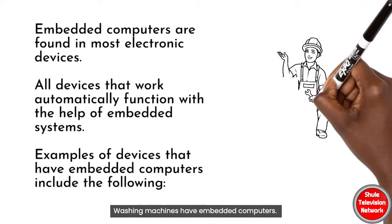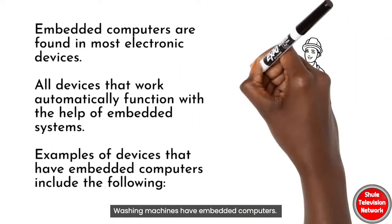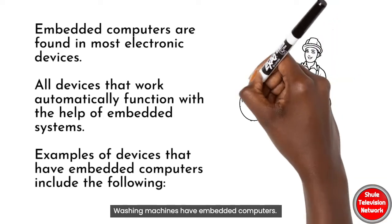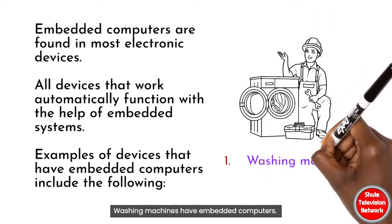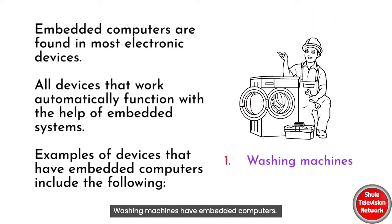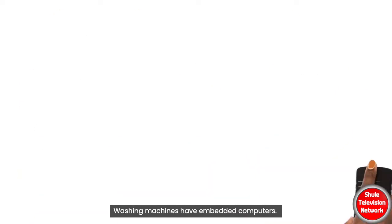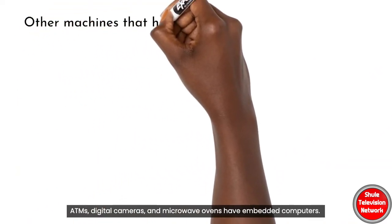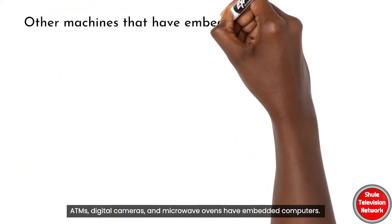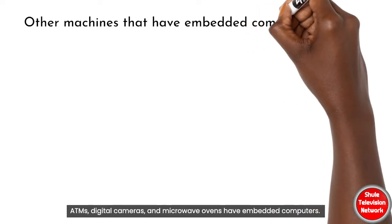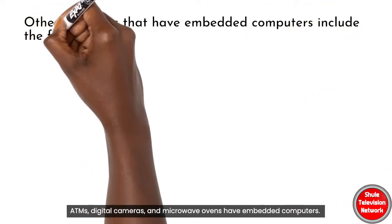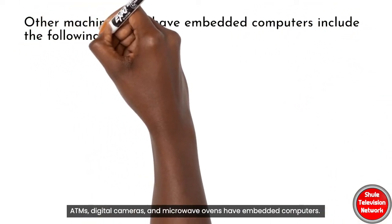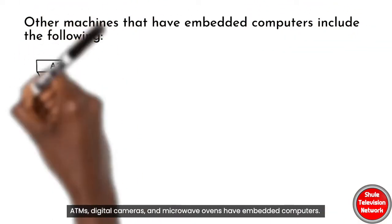Examples of devices that have embedded computers include the following: 1. Washing machines. Other machines that have embedded computers include the following.